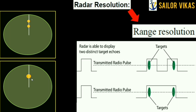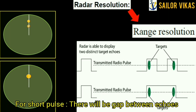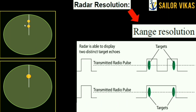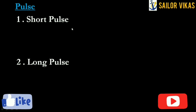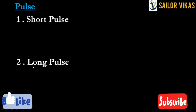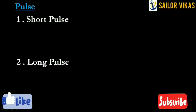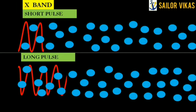For a short pulse, there will be a gap between the echoes, and because of that the two targets are detected separately. Pulses are of two types: short pulse and long pulse. There is also one more type called a medium pulse, which is an average of both.